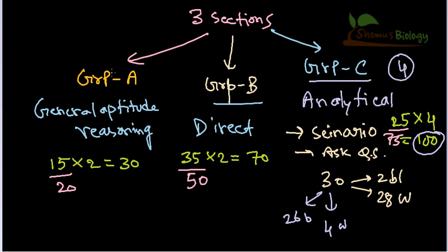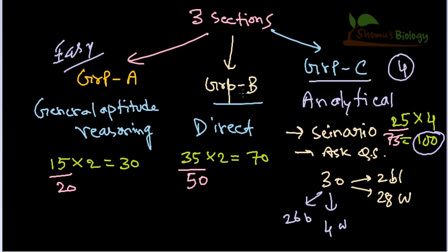Another important thing: you must pass Group A, otherwise your Group B and C papers won't be checked. Fortunately, if you have a moderate level of IQ and can solve one or two mathematical questions it is quite easy to clear Group A. For Group B, you need to read a lot of topics from the syllabus, as any direct question can appear, and it depends on your practice.